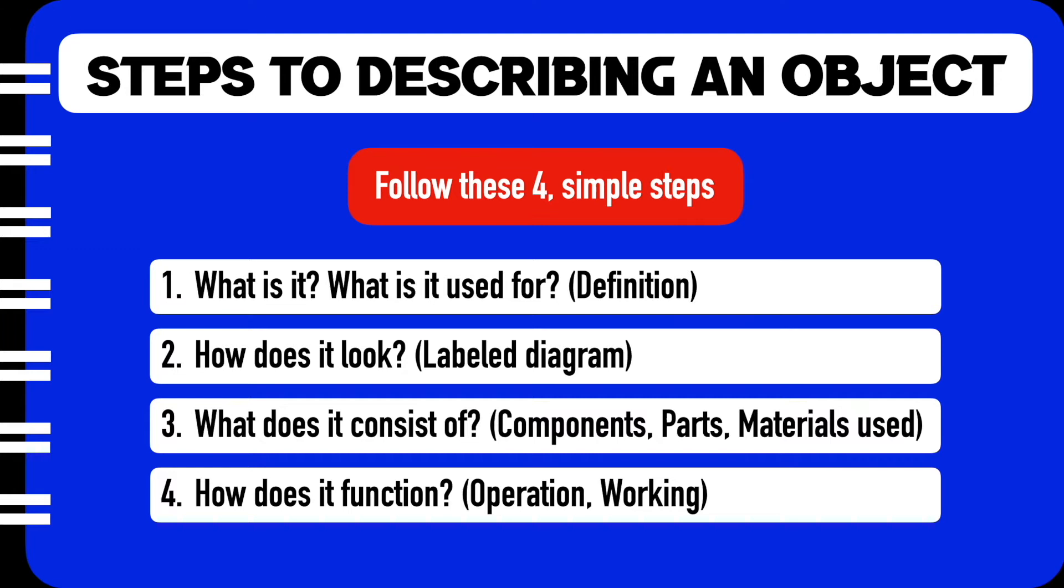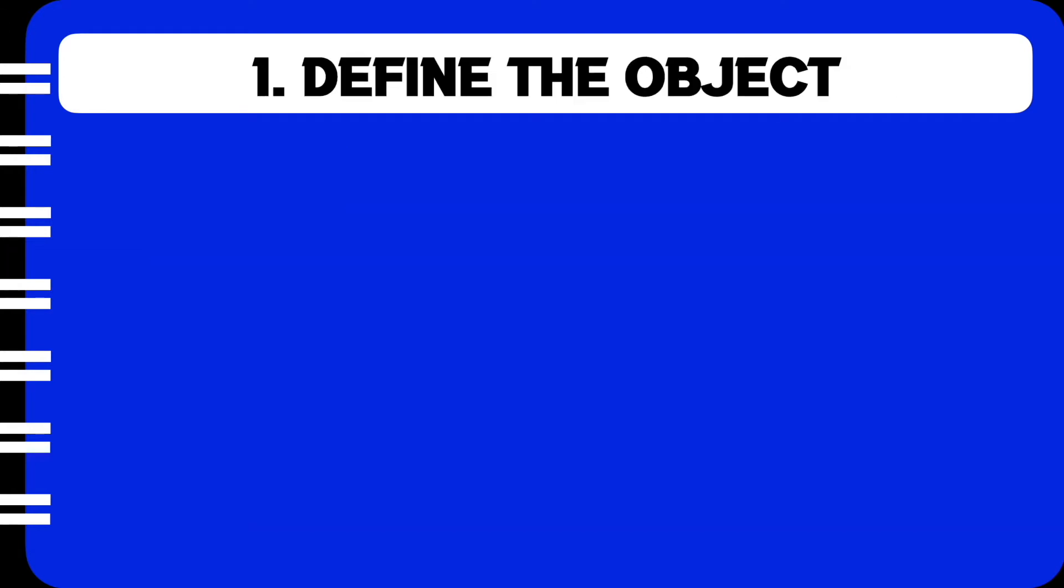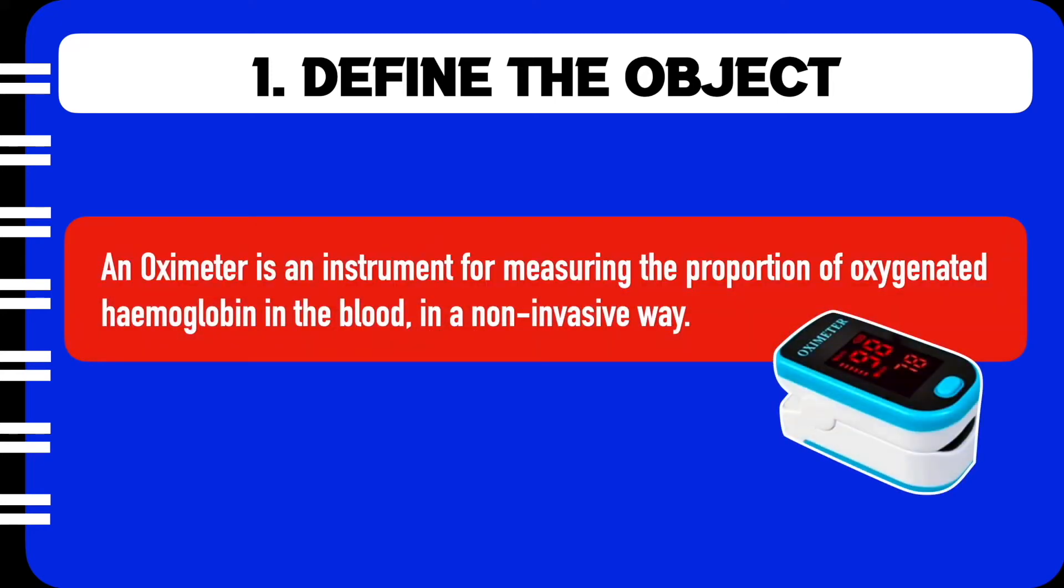So in today's video, I am going to be taking up an oximeter as an example to take you through the four steps of describing an object. I'll start with the first part of the description which is the definition. So an oximeter is an instrument for measuring the proportion of oxygenated hemoglobin in the blood in a non-invasive way.